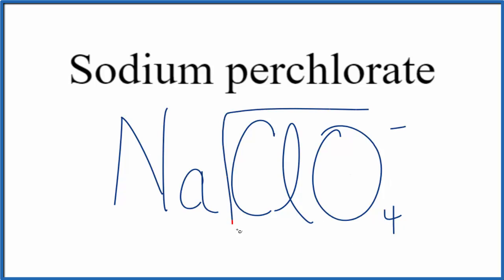We know the entire chlorate ion is 1 minus. Sodium, that's in group 1 on the periodic table, that's 1 plus. 1 plus, 1 minus, that adds up to zero.